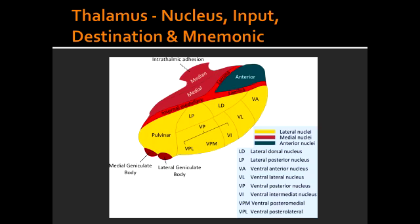The MGN (Medial Geniculate Nucleus) receives its input from the superior olive and inferior colliculus of the tectum. The MGN receives hearing information, and its end destination is the auditory cortex of the temporal lobe. The mnemonic: medial equals music. So medial geniculate is for hearing and lateral geniculate is for vision.